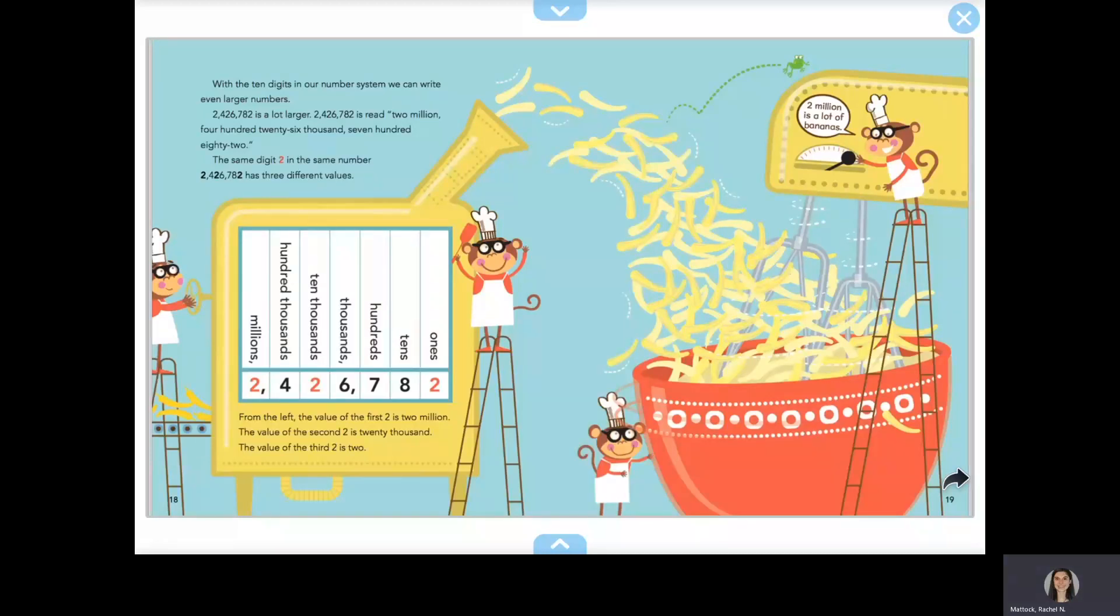The same digit 2 in the same number 2,426,782 has three different values. From the left, the value of the first two is 2,000,000. The value of the second two is 20,000. The value of the third two is 2.